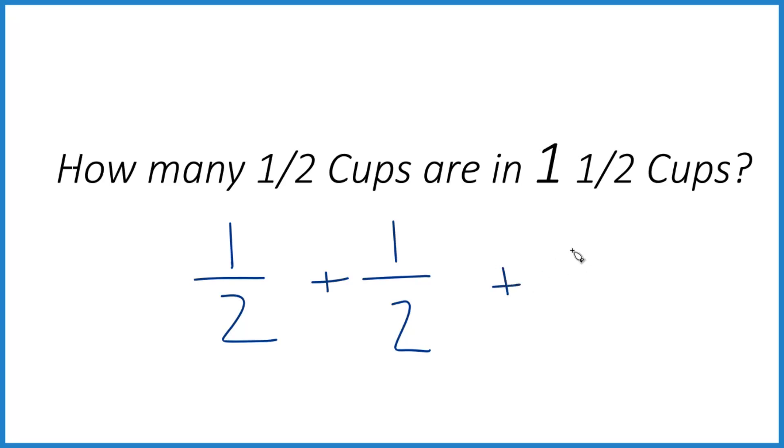If we add another half cup, we get that one cup here plus one-half. That equals one-and-a-half cups. So three of these half cups make up one-and-one-half cups.